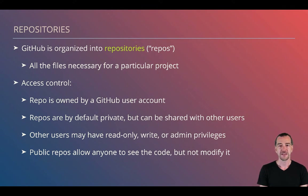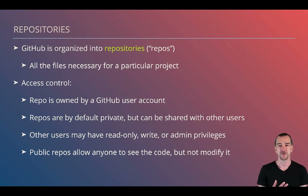The core unit of GitHub is a repository, which is essentially a project. A repository is sometimes called a repo for short. A repo contains all the files necessary for a particular project — code files, image files, data files, anything associated with the project. An individual would create a repo using their GitHub account, have admin access and control over it, and then allow other people to edit the repo.